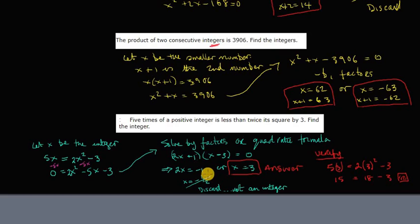I solved it by factors. You can solve it by the quadratic formula. I got x equals negative 1 half, which I discard because that's not an integer. And x equals 3. And when I verified it, I got the right answer. So, okay. I hope that helped. I'll see you next time.